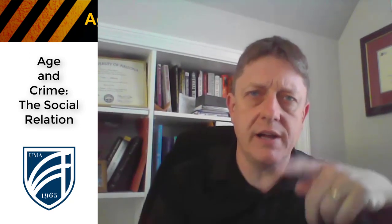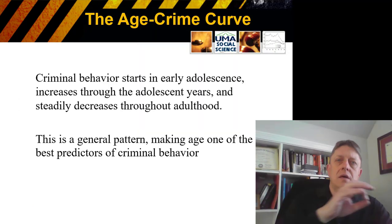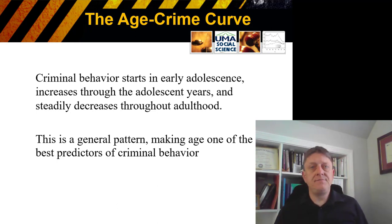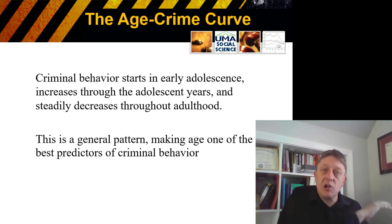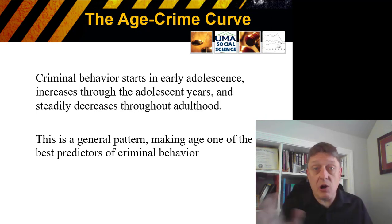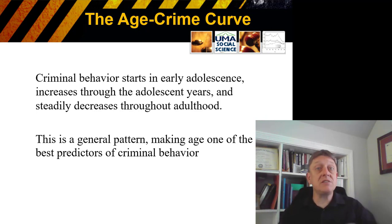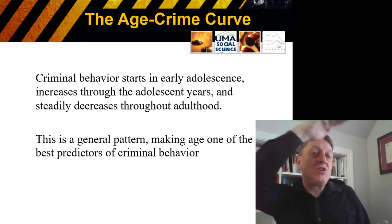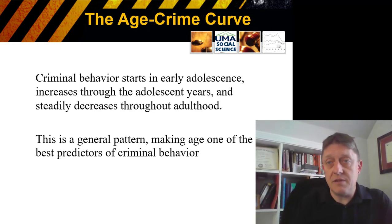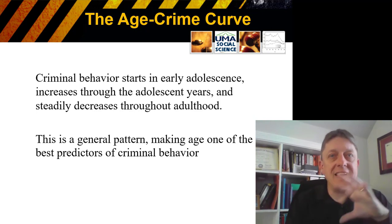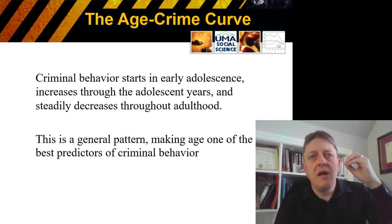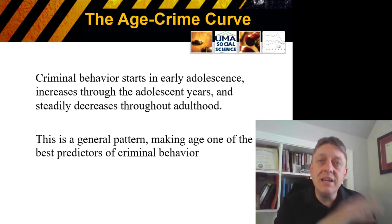One of the strongest patterns that we can observe in social science regarding crime has to do with the social dimension of age. This is called the age-crime curve, in which criminal behavior tends to start in early adolescence, increase during the adolescent years, and then steadily decrease throughout adulthood after young adulthood. It's a general pattern that has been observed in country after country, year after year, across time.